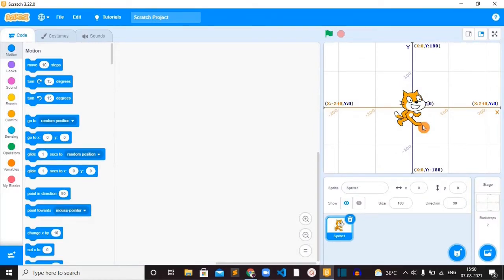So initially the scratch cat will be in the center of the stage. Now I want to move this cat to set its position in the top right corner. So I am going to use positive 194 x and positive 130 for y. So now the cat is in the top right corner.